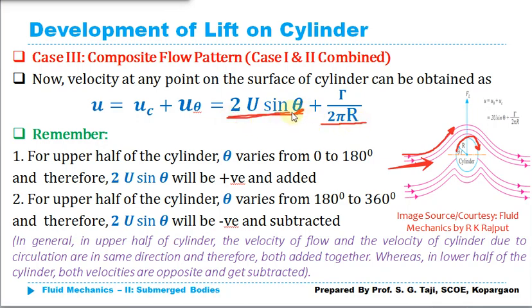The term θ governs whether the 2U sin(θ) component gets added to or subtracted from γ/(2πr). For the lower portion, sin(θ) is negative, so that component is subtracted. Therefore, the velocity at all locations below the horizontal axis of the cylinder is less than at the top. Due to this velocity difference, the flow in the lower portion decelerates and in the upper portion accelerates. According to Bernoulli's principle, this creates a pressure decrease on the upper side and a pressure increase on the lower side, resulting in a net vertical force — the lift force — acting on the cylinder.